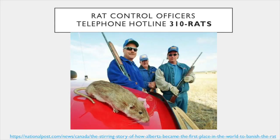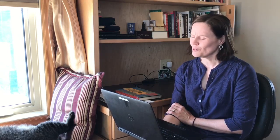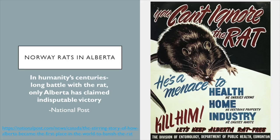There continues to be rat patrol even today. They not only inspect the perimeter, but there are also instances where rats can hitch rides on rail cars or highway vehicles. There's a hotline — 310-RATS — a toll-free number you can call any time to report rat sightings. They follow up and investigate any tips, although most of them are misidentified. Sometimes people see a young muskrat or a diseased squirrel that looks similar to rats. But in instances where rats have actually caught a ride, the rat patrol deals with them very effectively. In humanity's centuries-long battle with the rat, only Alberta has claimed indisputable victory.